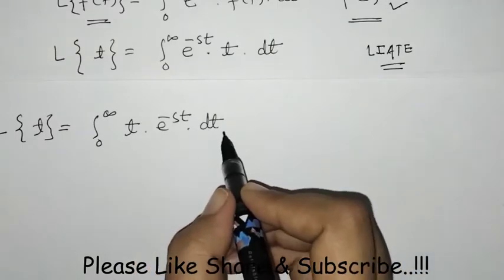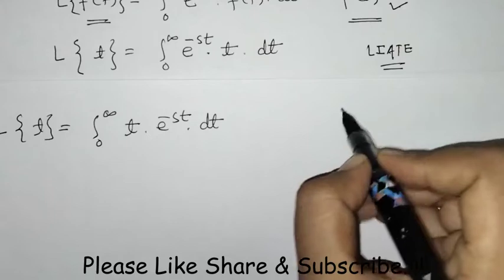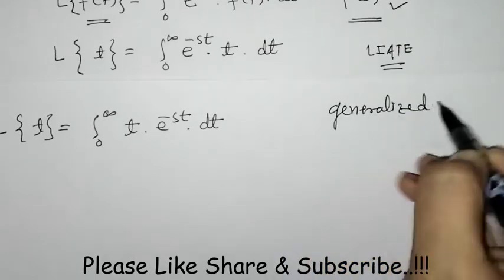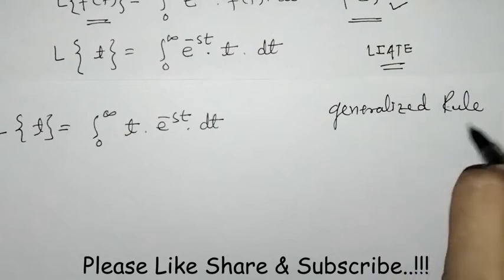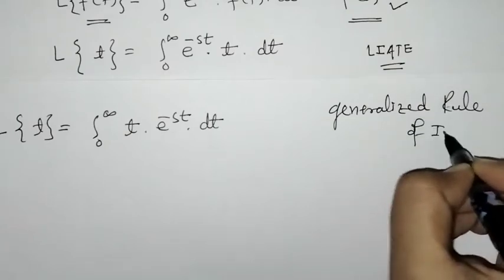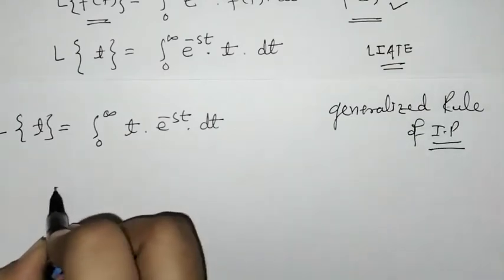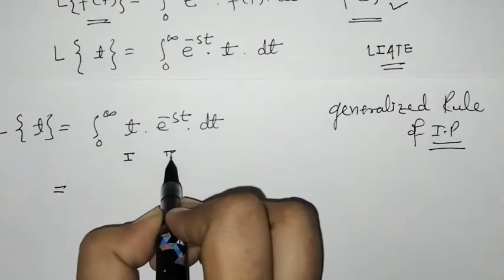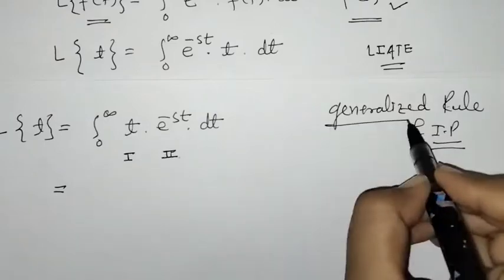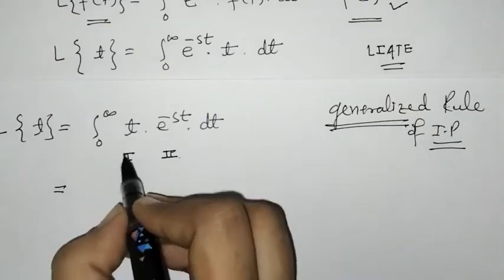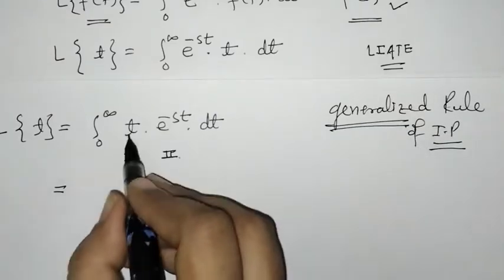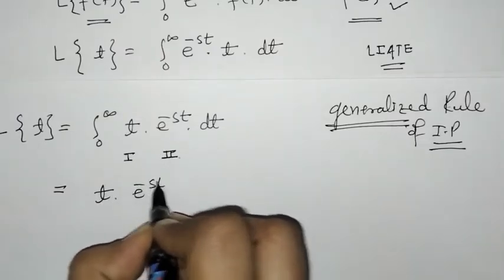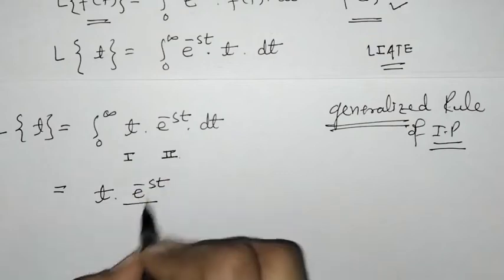We have to find its integration with respect to t and apply integration by parts using the generalized rule. Since the first function is a power function of the variable, we can apply this generalized rule. So the first function is t as is, then the integration of e raised to minus st.